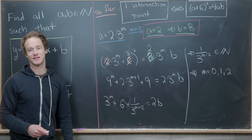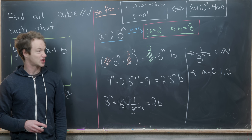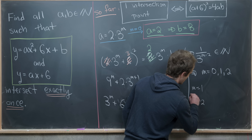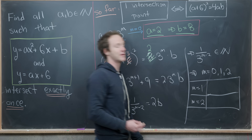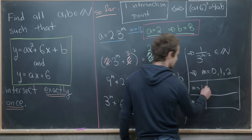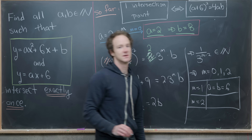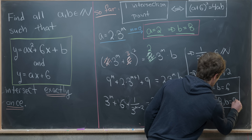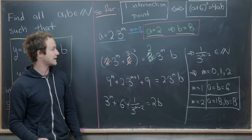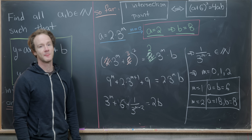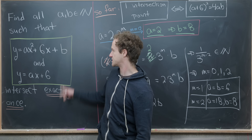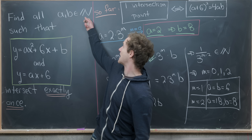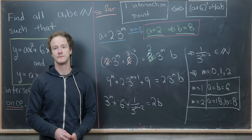m = 0 gives a = 2, b = 8 as found before. Checking m = 1 gives a = 6, b = 6, and m = 2 gives a = 18, b = 8. These are the only three solutions providing exactly one intersection point. As a homework extension, try solving this problem over all integers instead of just natural numbers.